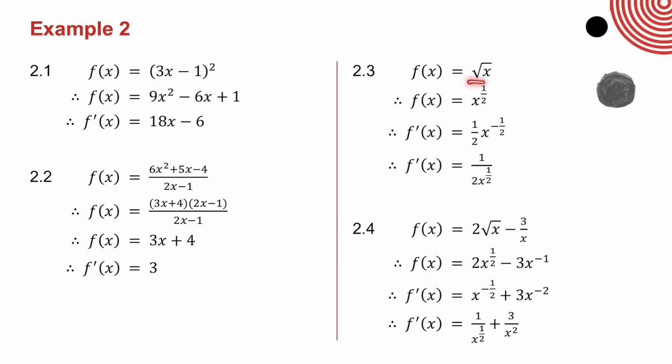2.3, I change the root x to x to the half. A half times 1 is a half. A half minus 1 is minus a half. And then I take the x to the minus a half to the bottom of the fraction. Again, have a good look at where my notation changes.